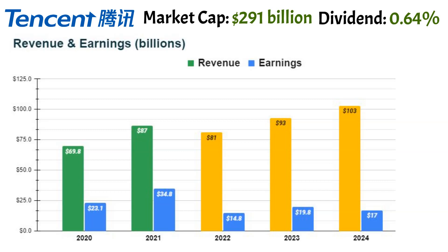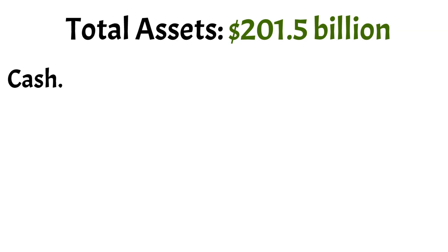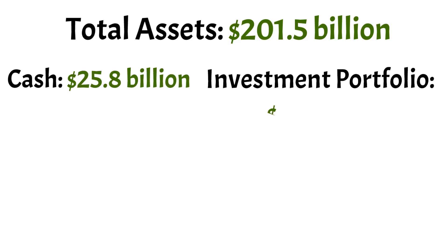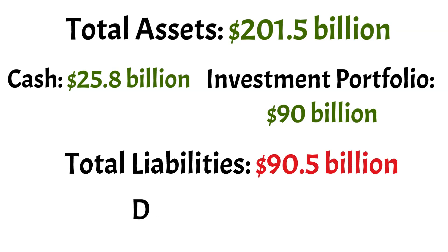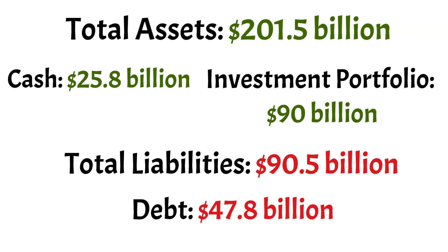They may face problems this year and next, but they'll recover and you might see higher profits in the future. Total assets are $201.5 billion, of which $25.8 billion is cash and $90 billion is the value of their investment portfolio. Total liabilities are $90.5 billion, of which debt is around $47.8 billion. The debt is a little high, but they have low interest rates under 4%, so they are effectively using cheap money for future investments. With over $15 billion in earnings, they can easily pay the debt in less than 5 years.